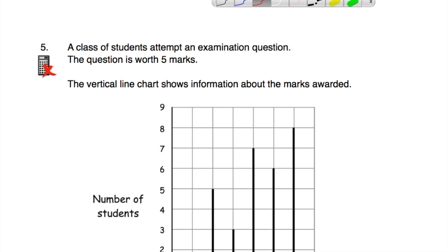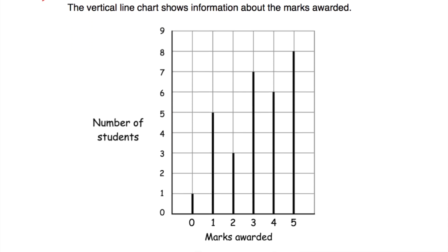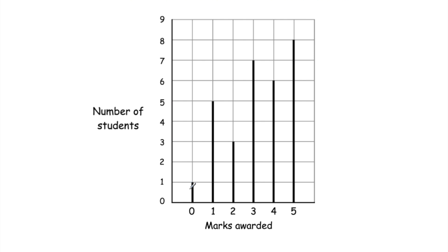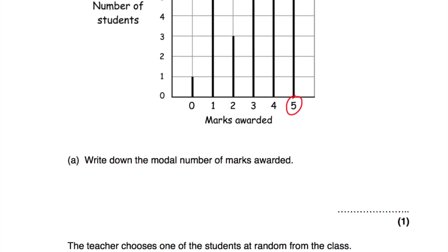Question number five: a class of students attempts an examination question worth five marks. Part A asks for the modal number of marks awarded. Looking at the vertical line chart, the highest line is at five marks — eight students achieved five marks, six achieved four marks, seven achieved three marks, three achieved two marks, five achieved one mark, and one got no marks. So the modal mark is five.